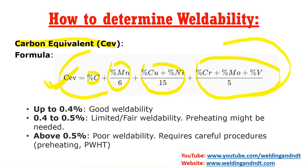After calculating the carbon equivalent, you can judge weldability. If the result is up to 0.4, the weldability is good. If the carbon equivalent is between 0.4 and 0.5, it is limited or fair weldability, and preheating might be required. If the carbon equivalent is more than 0.5, it is poor weldability — very tough to weld — and preheating, post-heating, and post-weld heat treatment may all be required.